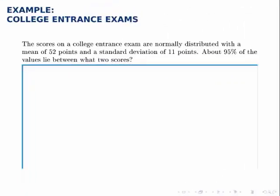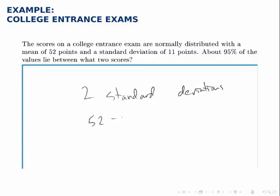The scores on a college entrance exam are normally distributed with a mean of 52 points and a standard deviation of 11 points. We're asked to find what two scores encompass 95% of the test takers. Since the data is normally distributed, the empirical rule tells us that 95% of the data will be within two standard deviations of the mean. One standard deviation is 11 points, so two standard deviations is 22 points. Therefore, 52 − 22 = 30 and 52 + 22 = 74. So 95% of values lie between 30 and 74.